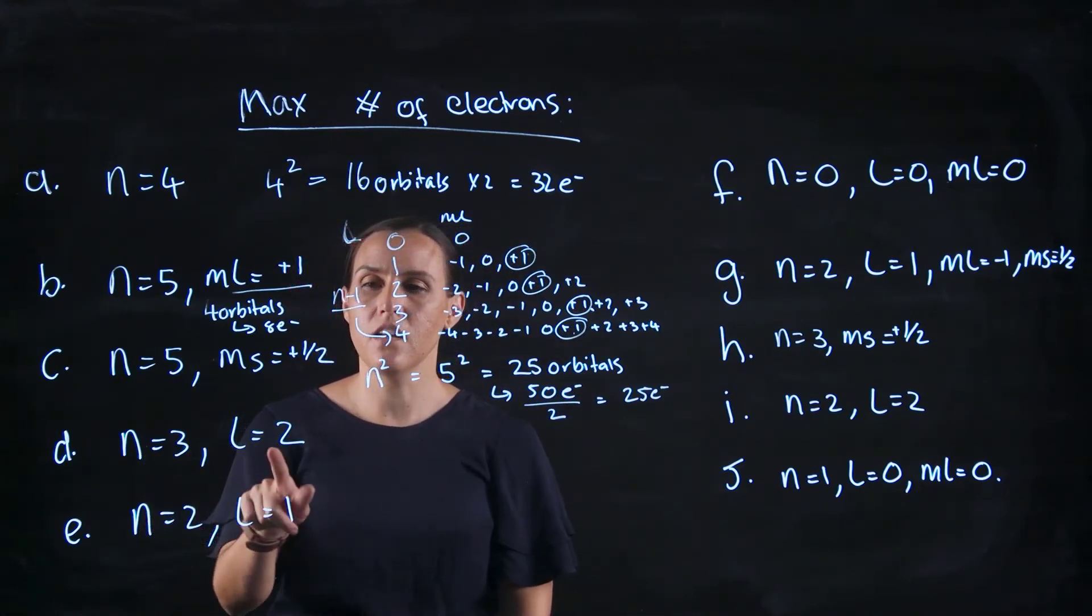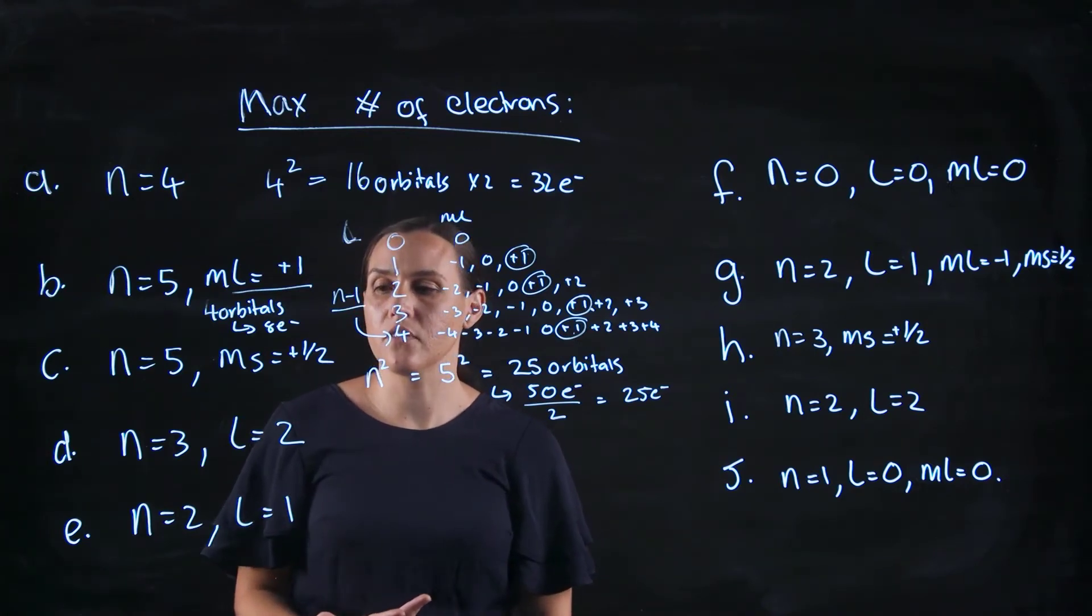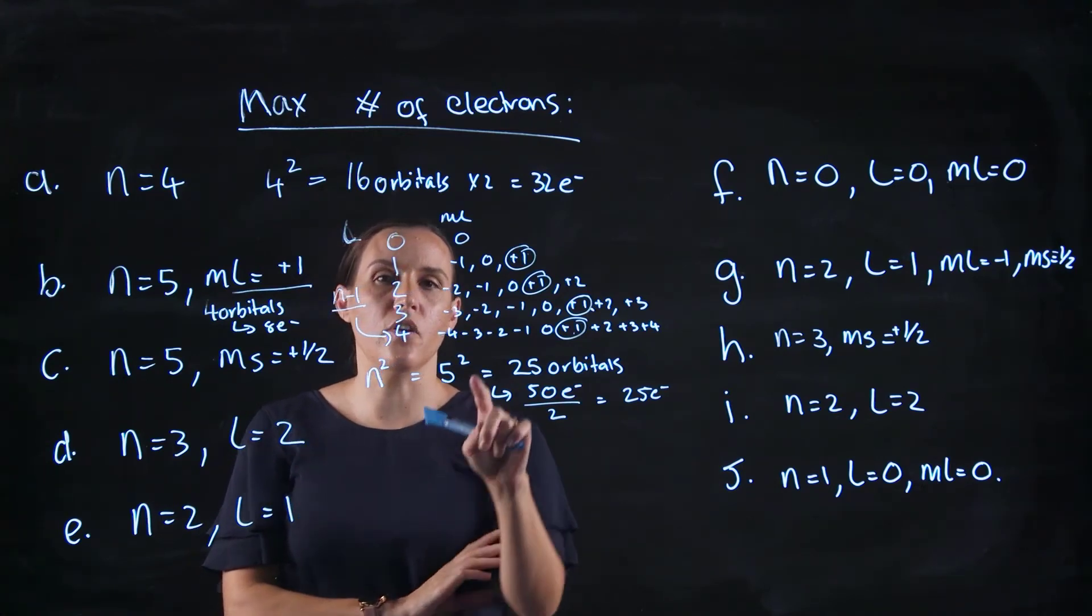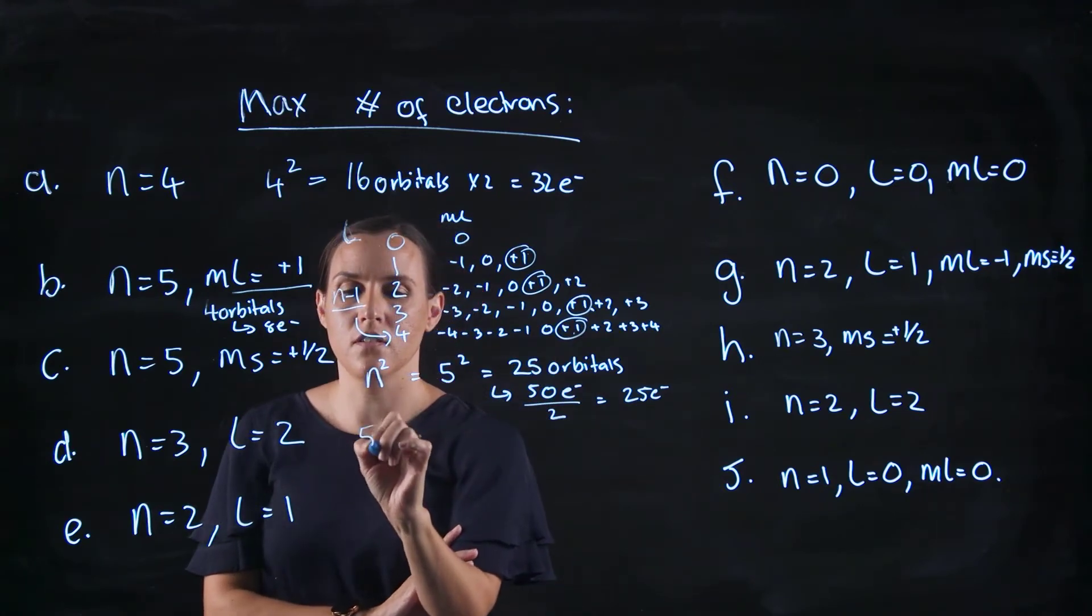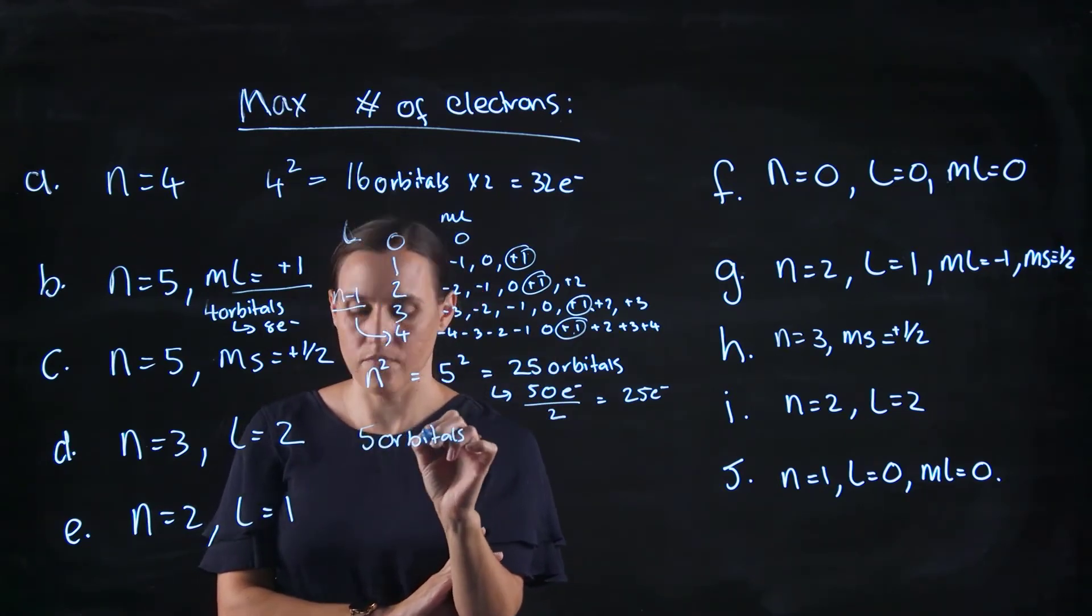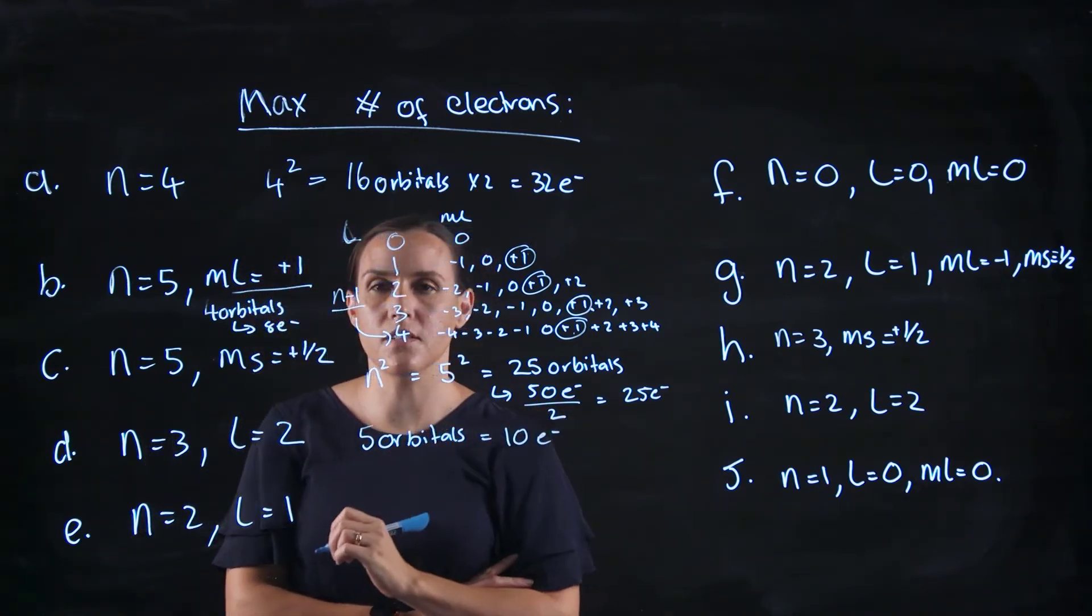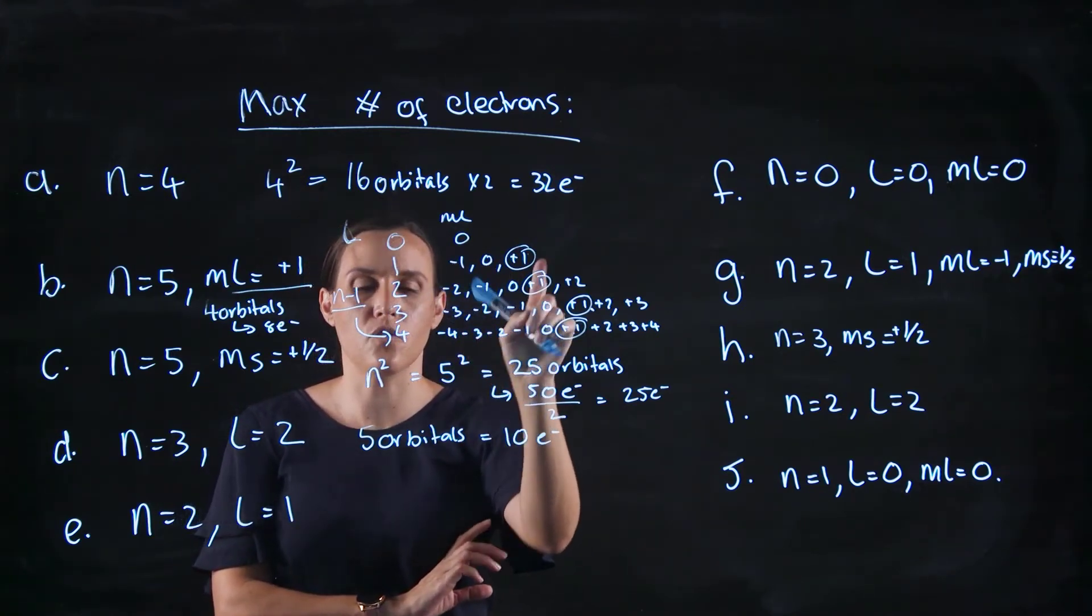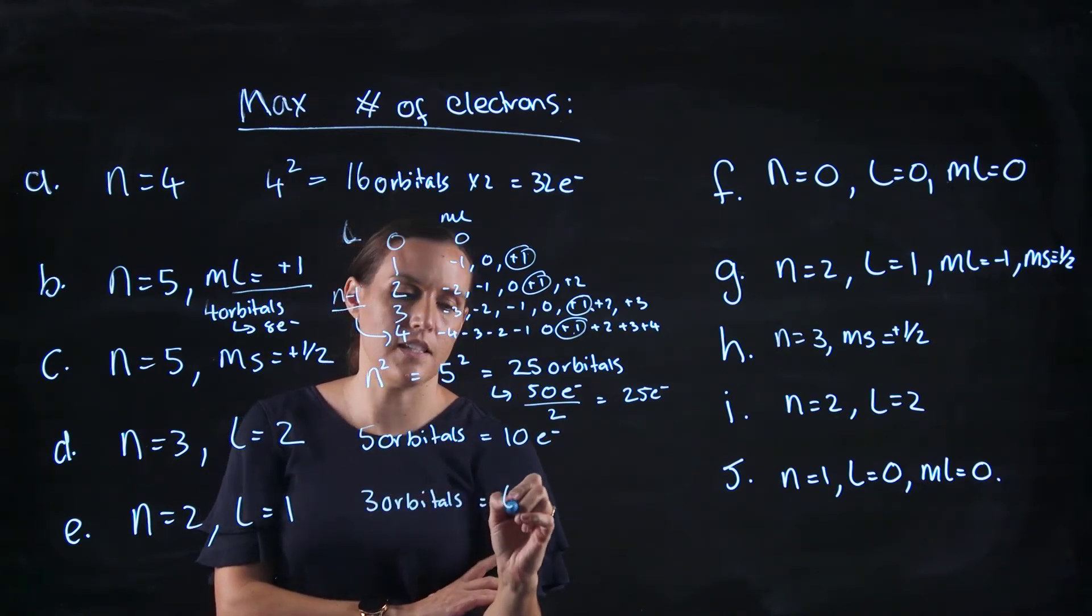So n equals 3, l equals 2. With n equals 3, l equals 2, how many orbitals do we have? So looking at the number of orbitals for l equals 2, we've got 1, 2, 3, 4, or 5 orbitals. So therefore 10 electrons because there'll be 2 in each orbital. Now we've got n equals 2 and l equals 1. So we've got 1, 2, 3 orbitals and 6 electrons.